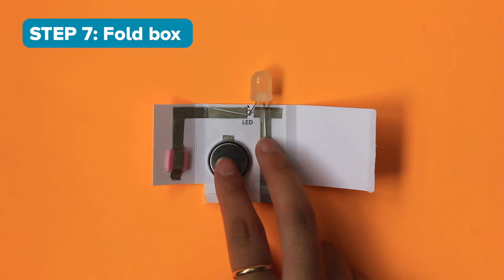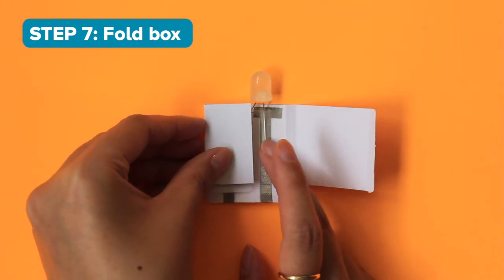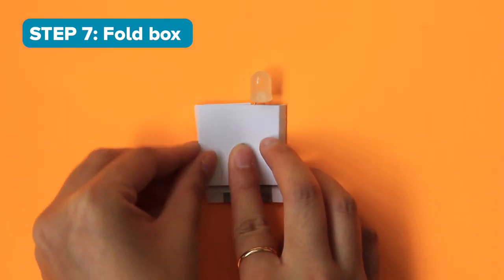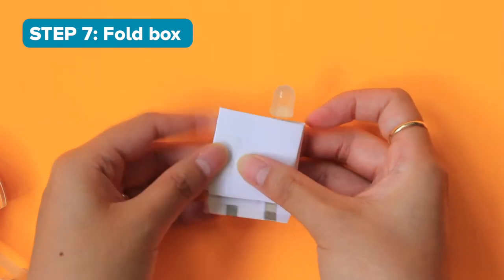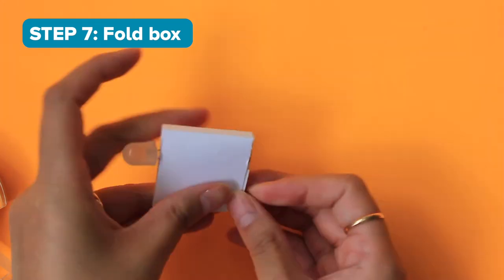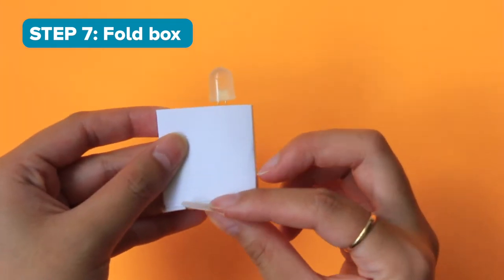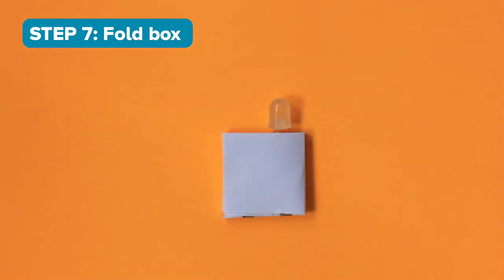Step 7. It's time to fold your box. Fold this flap over and then this one over top and tape it here. Tuck the bottom flap in so that your battery doesn't fall out. You can also add a little regular tape here to keep it in place too.